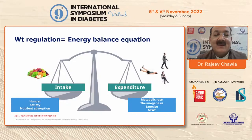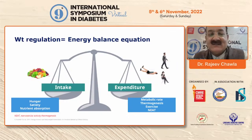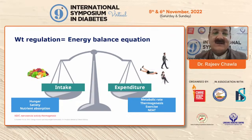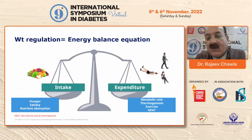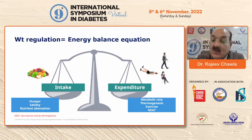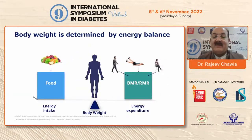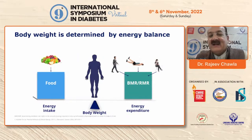It is a very simple thing in layman terms: when we talk about weight regulation, it is something to do with the energy balance equation, where intake has to match expenditure. The moment intake is more and expenditure is less, obviously we will end up with obesity. So intake is about management of hunger, management of satiety, and nutrient absorption, which then has to be burnt in the form of calories — through metabolic rate, thermogenesis, a structured exercise program, and non-exercise activity-based thermogenesis.